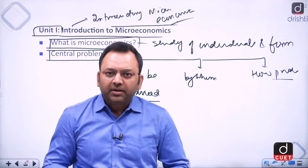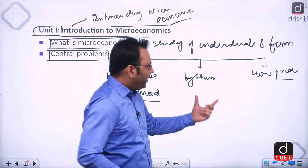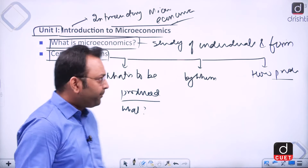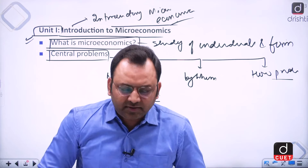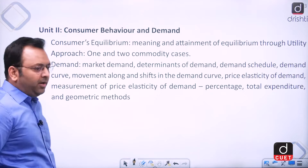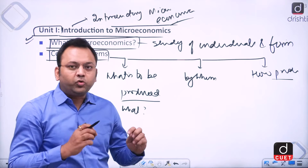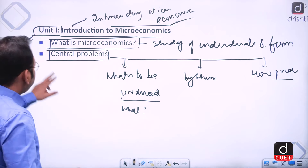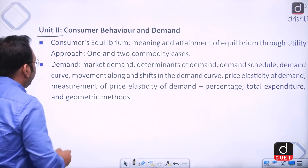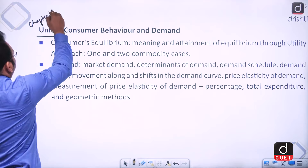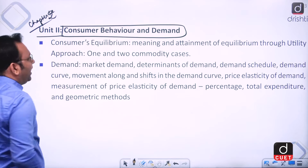The central problems of microeconomics are: what is to be produced, how it is to be produced, and by whom it has to be produced. These topics are covered in the first unit. The second unit, corresponding to chapter 2 of class 12th NCERT microeconomics, deals with consumer behavior and demand.